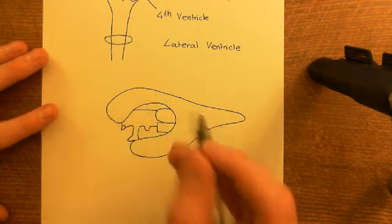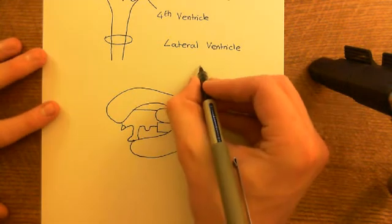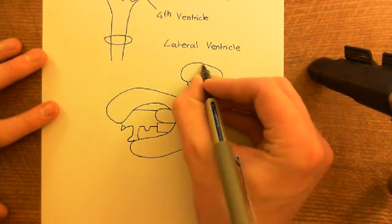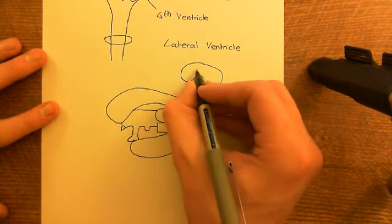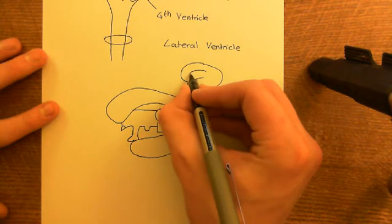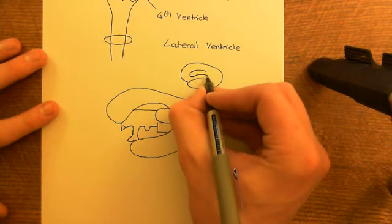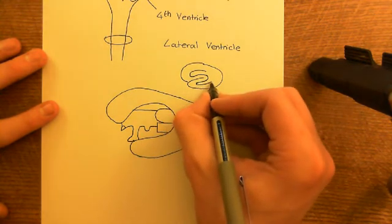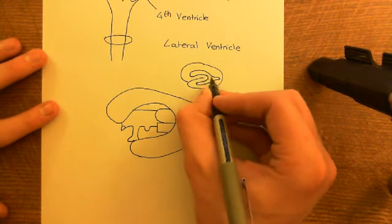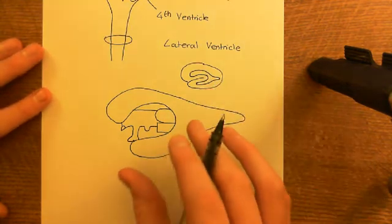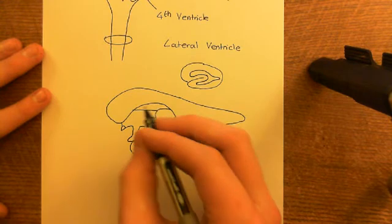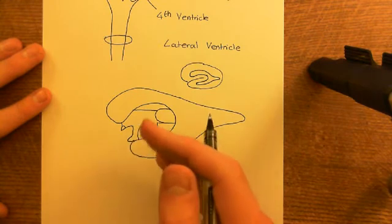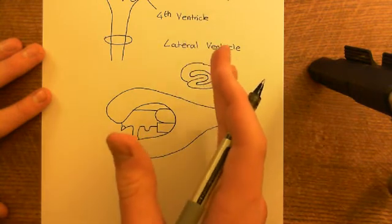The frontal portion of the lateral ventricle is in the frontal lobe. There's a small projection in the temporal lobe, and then the tail stretches into the occipital portion. This is the left lateral ventricle, and you're going to have the exact equivalent in the right hemisphere as well, fully symmetrical down the sagittal midline of the brain.